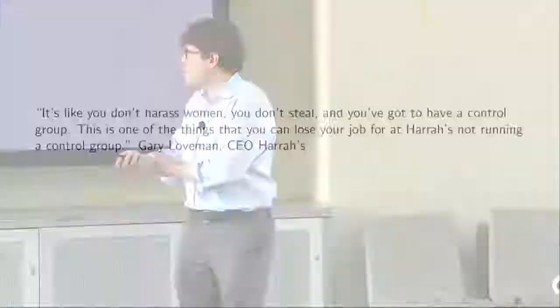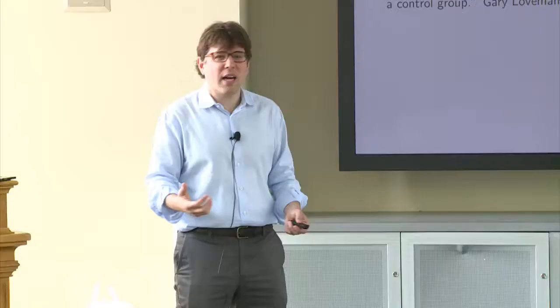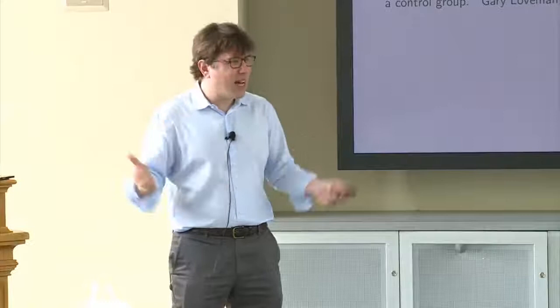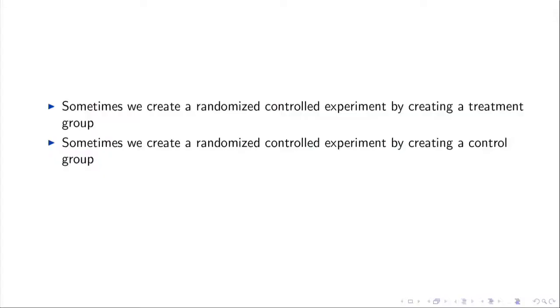Now, this difference is a really, really important difference. So this is one of my favorite quotes illustrating the importance of this. So this is from the CEO of Harris Casino. And he's talking about the things that you can do to get fired from Harris. It's like, you don't harass women, you don't steal, and you've got to have a control group. This is one of the things that you can lose your job for at Harris, not running a control group. So again, we see often when people think about the value of experimentation, they think about the value of doing something. Like, I have something I want to do, let's go do that. But often people are doing stuff all the time, and the real value can come from just creating a control group. So try to think about experiments that way as well. And that will, again, I think, emphasize the importance of a control group in figuring out what we can learn in the world. So this is what I just said. Sometimes we create randomized controlled experiments by creating a treatment group, and sometimes we do it by creating a control group.